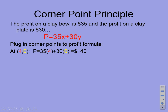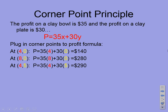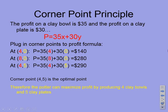At corner point (4, 0): plug in X = 4 and Y = 0, and we get a profit of $140. At (8, 0): plug in those values and we get a profit of $280. Now plugging in the last corner point (4, 5) — making 4 clay bowls and 5 clay plates — we get a profit of $290. So the corner point (4, 5) is the optimal point; it is the point that will maximize our profit.